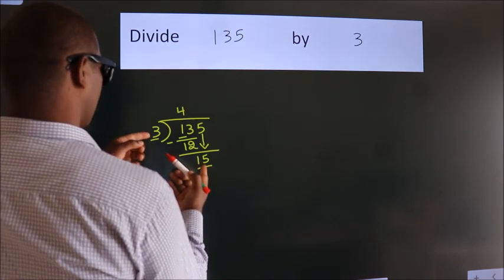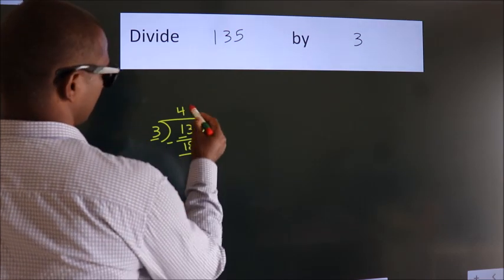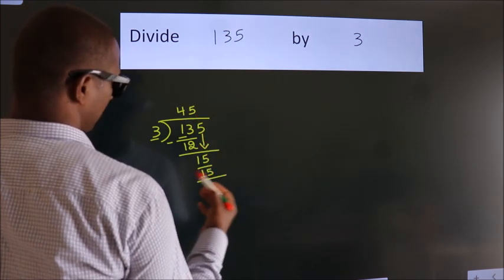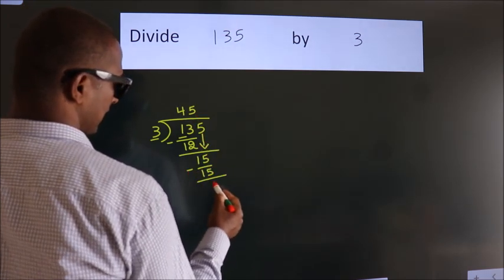When do we get 15? In the 3 table, 3 times 5 is 15. Now we subtract and get 0.